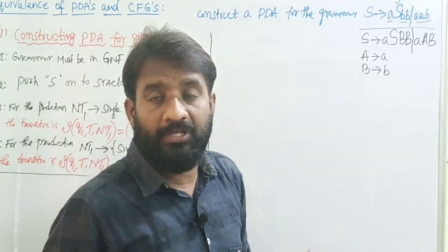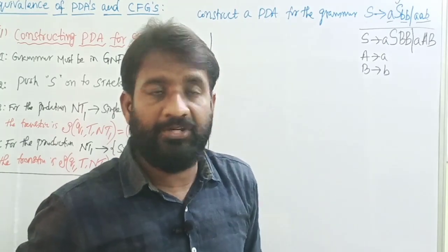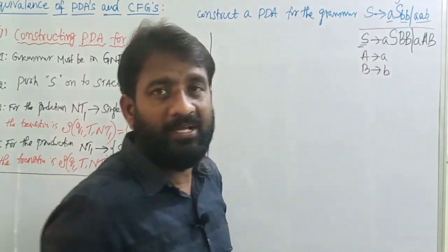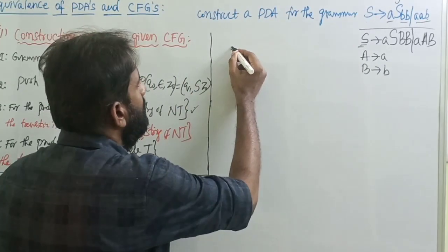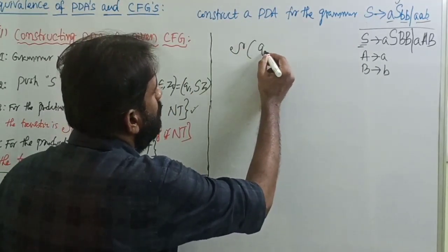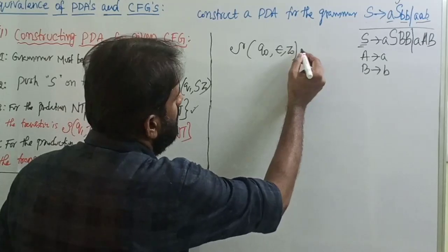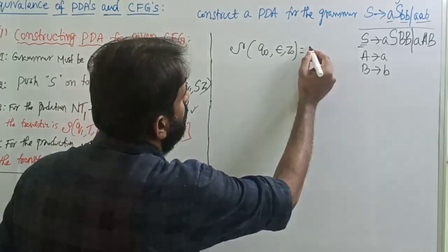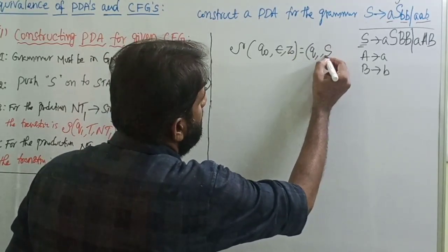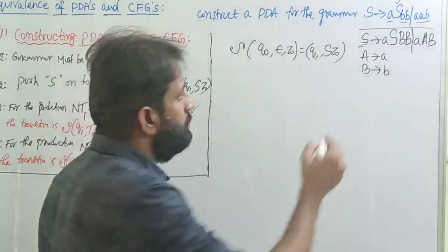Now convert this grammar into the pushdown automata by writing the transitions. First, push S onto the stack by writing the transition: δ(Q0, ε, Z₀) = (Q1, S Z₀). Done.